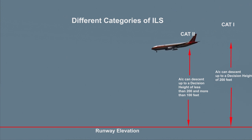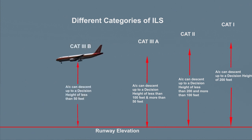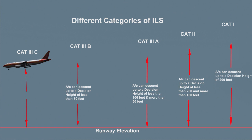In category 3A, the aircraft can further descend up to 50 feet. In category 3B, the aircraft can further descend to less than 50 feet. For category 3C, there is no limit and it is not used currently.